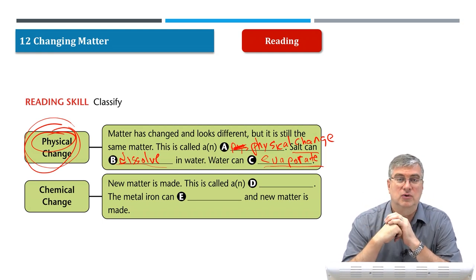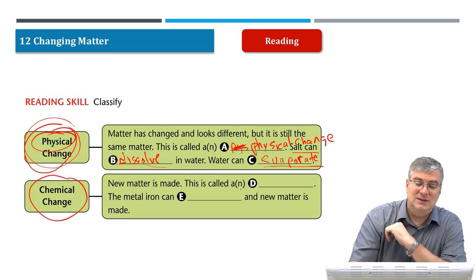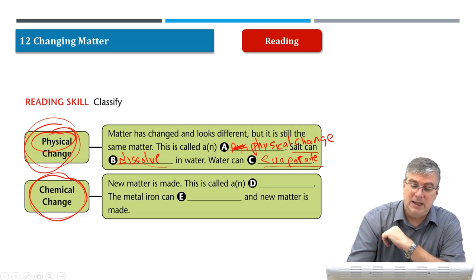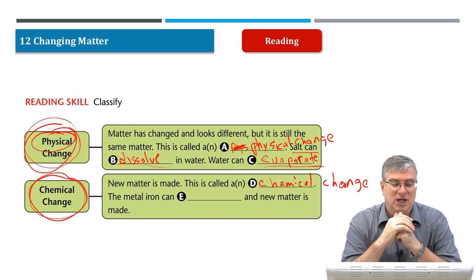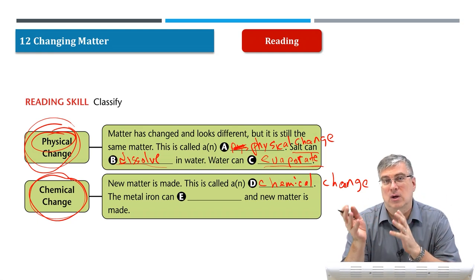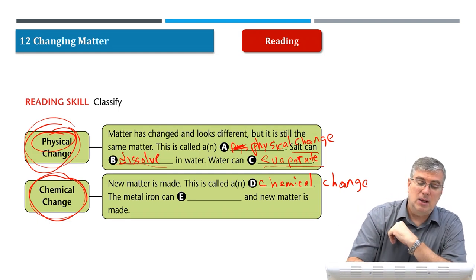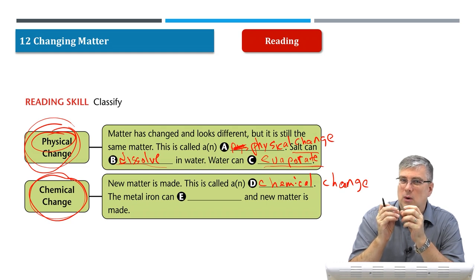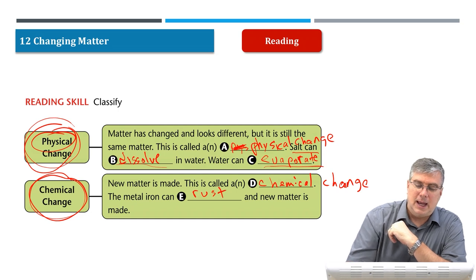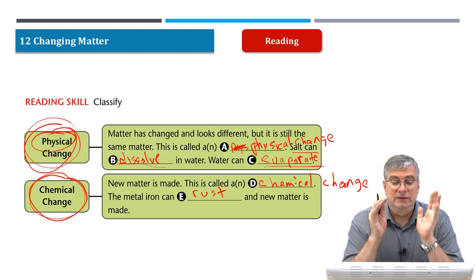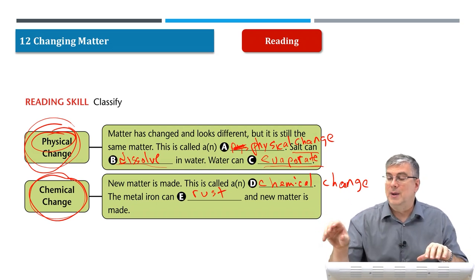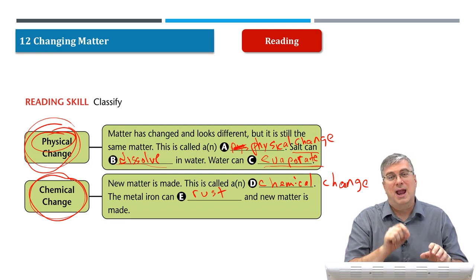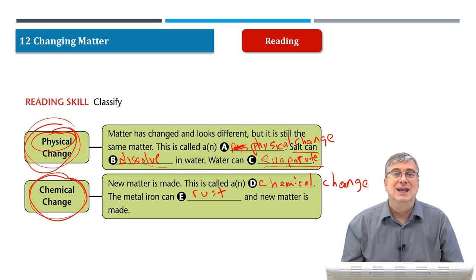The same thing happens for chemical change: first we define it — new matter is made, this is called a chemical change. Then what's a type of chemical change? When the metal iron changes into a red or brown material, we call that rust. And new matter is made. This is a good way to organize your information in a reading passage: classify it into groups, define what each group is, and give examples. Then define the other group and give examples. That's a very good way to organize information.